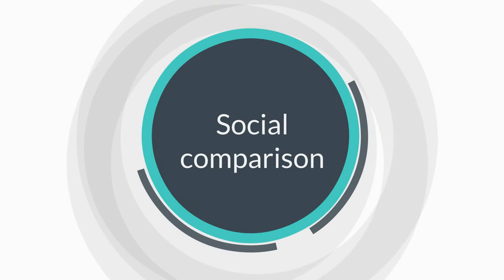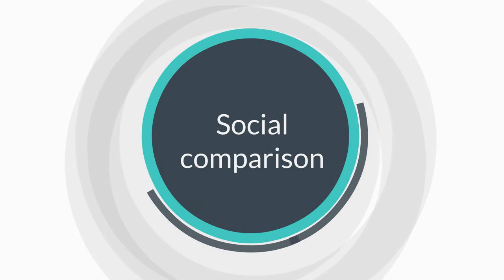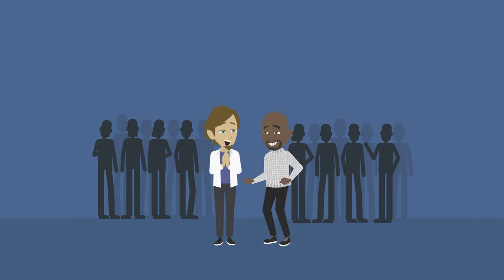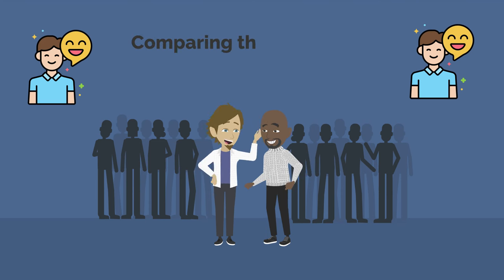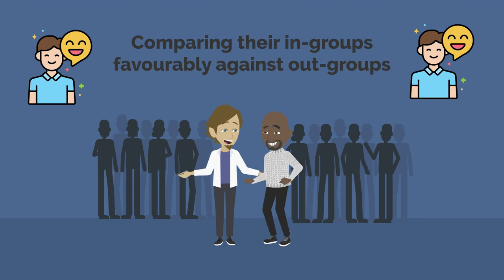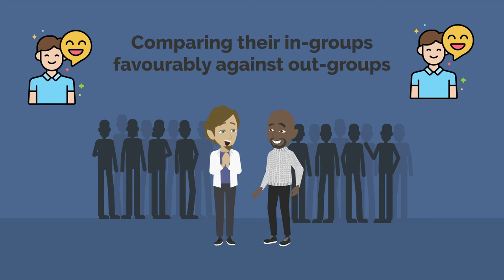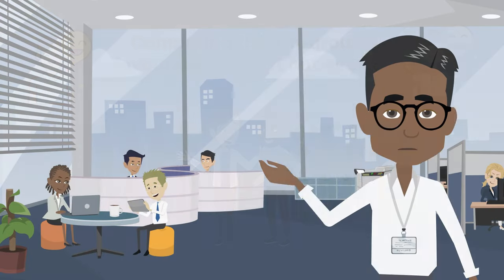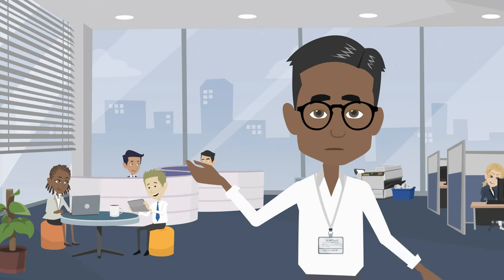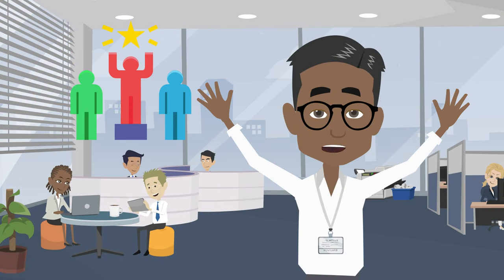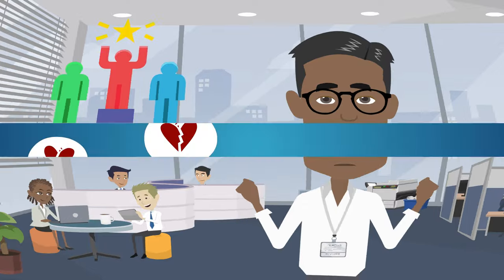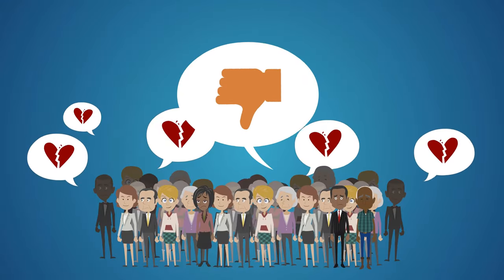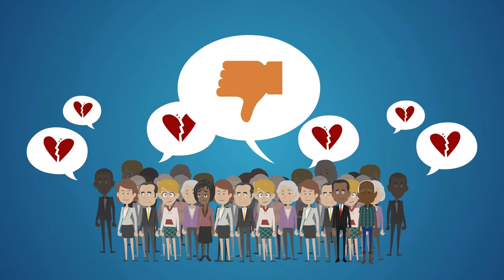Another crucial aspect is the idea of social comparison. Individuals are motivated to achieve a positive social identity, and they do this by comparing their in-groups favourably against out-groups. When people perceive their group as inferior, they may either strive to improve the status of the group or engage in social mobility by leaving the group.